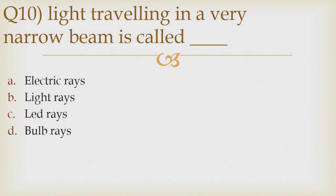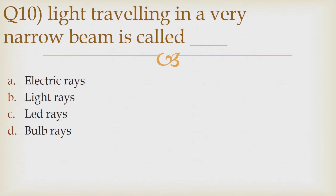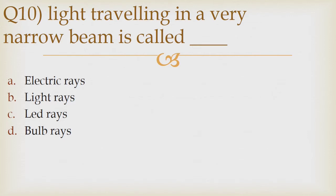Question number 10. Light traveling in a very narrow beam is called dash. Option A: Electric rays. Option B: Light rays. Option C: LED rays. Option D: Bulb rays. The correct answer is option B: Light rays.